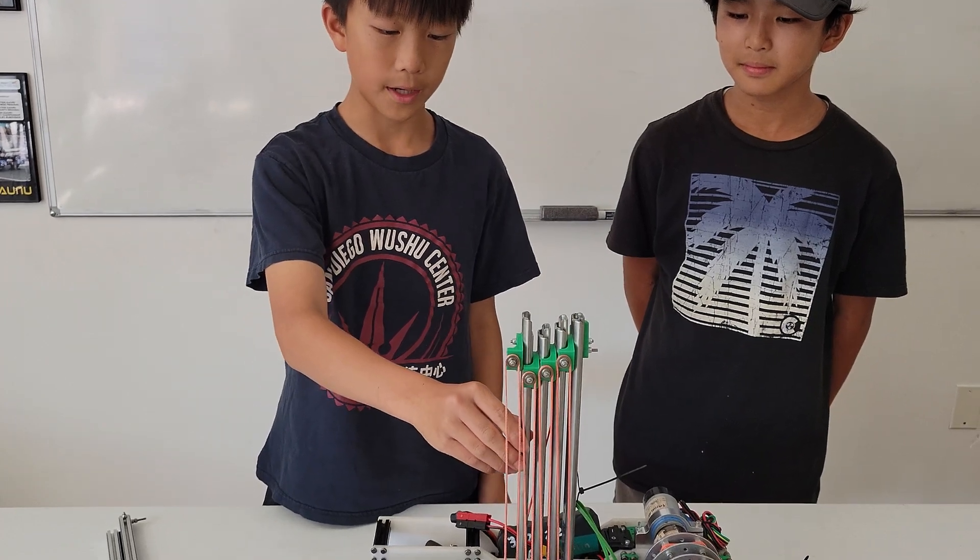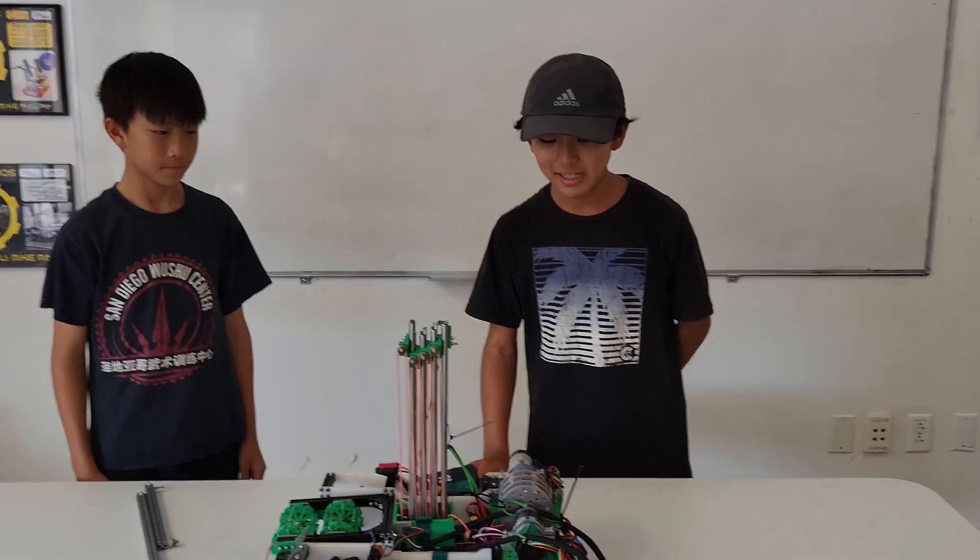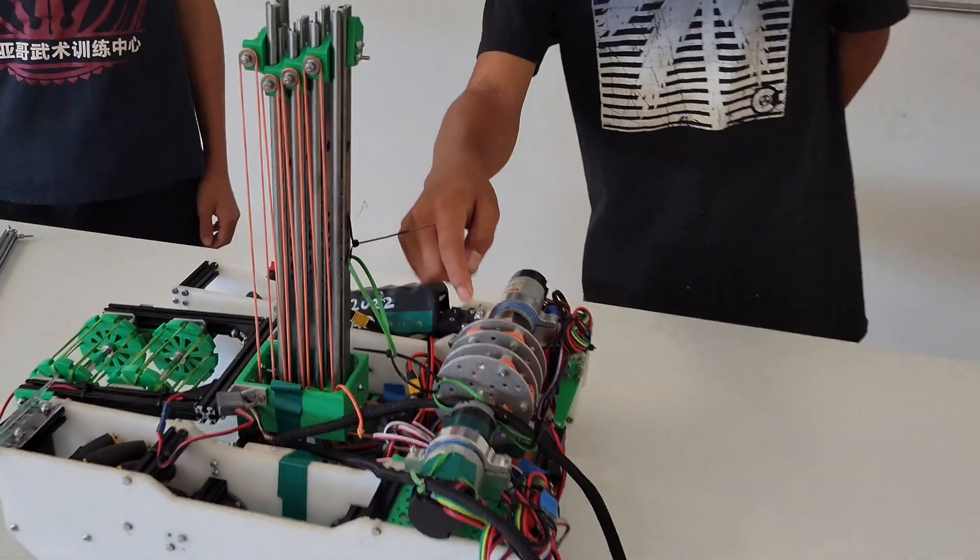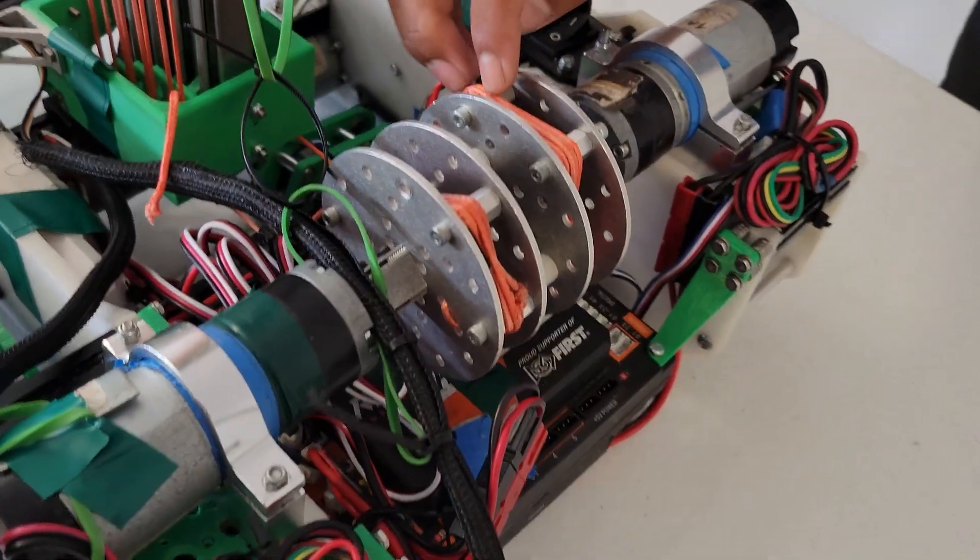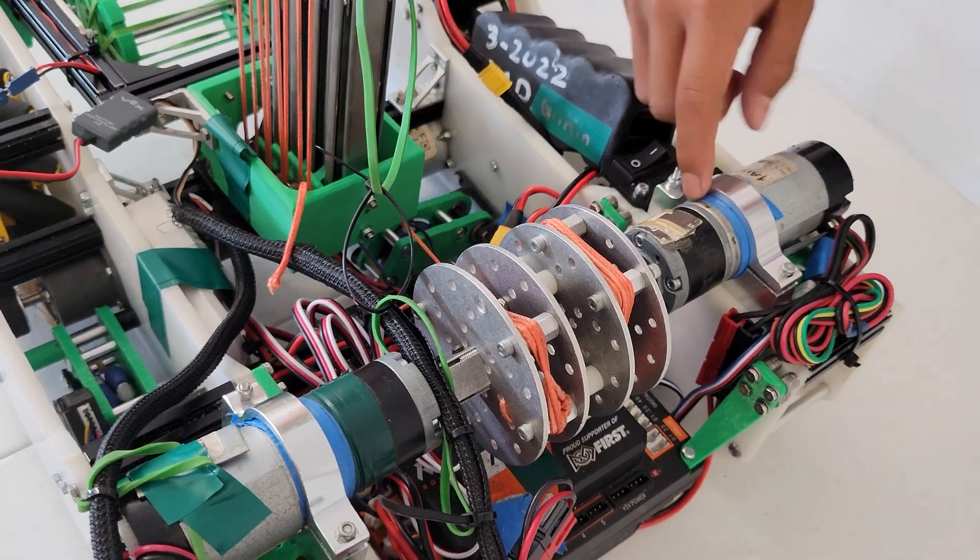This is how the linear slide works. We have a spool, it's connected to two strings and two 20-to-1 AndyMark NeveRest motors here and here. This string pulls it up like this.